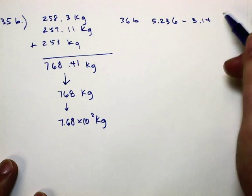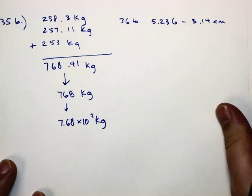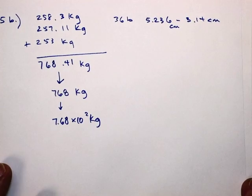Staring at me doing a problem does not make you any better at it. So we got 5.236 centimeters minus 3.14 centimeters. You tell me, which one has the least amount of digits past the decimal point? The first or the second number? Second. Yeah. It has only two past the decimal point and the third one has three. So that means that's what our answer is going to look like.